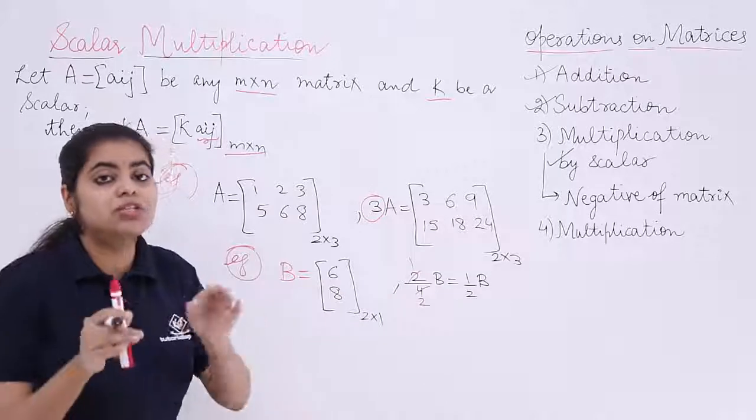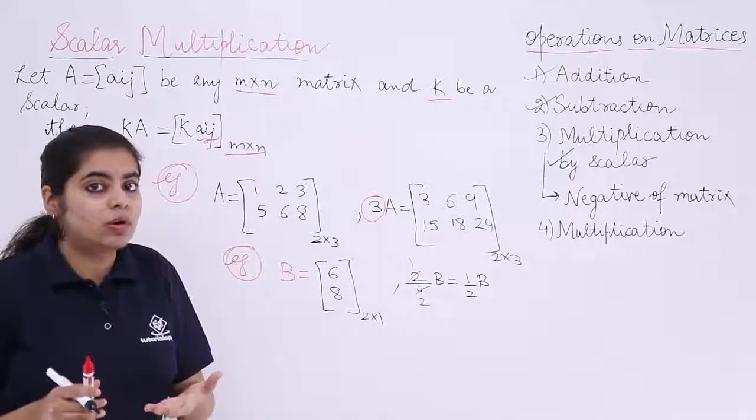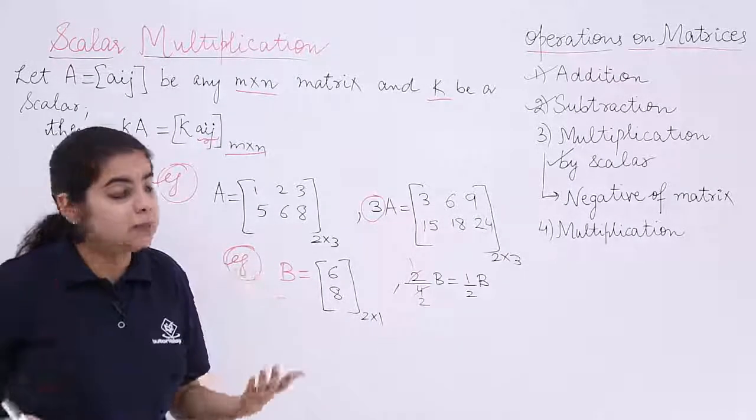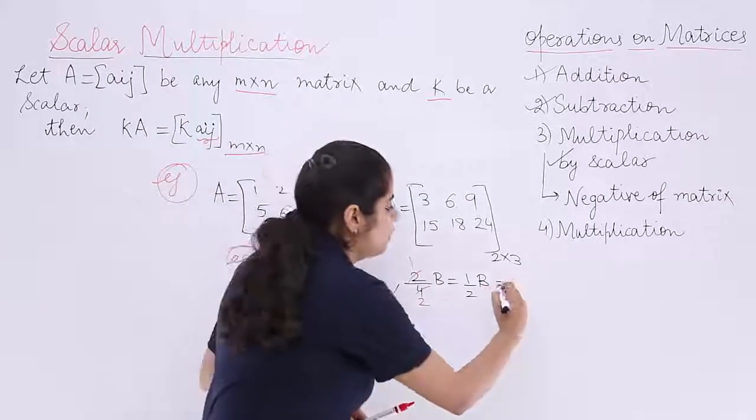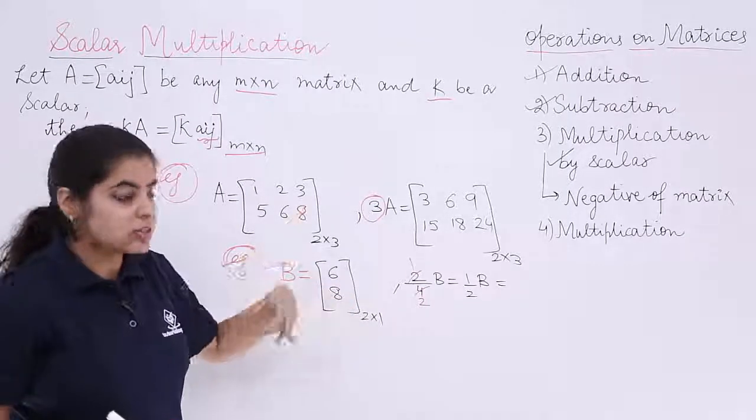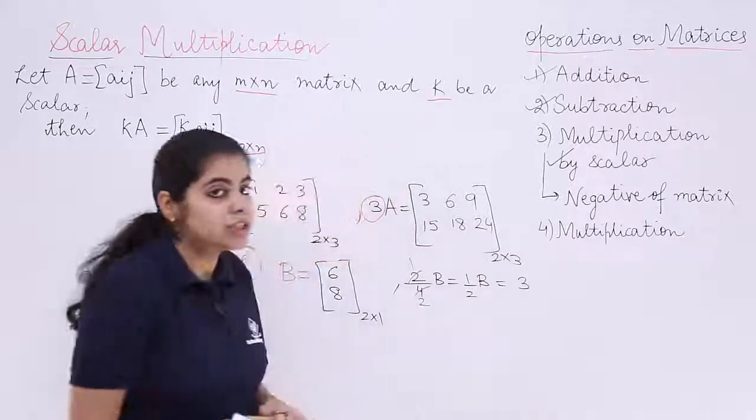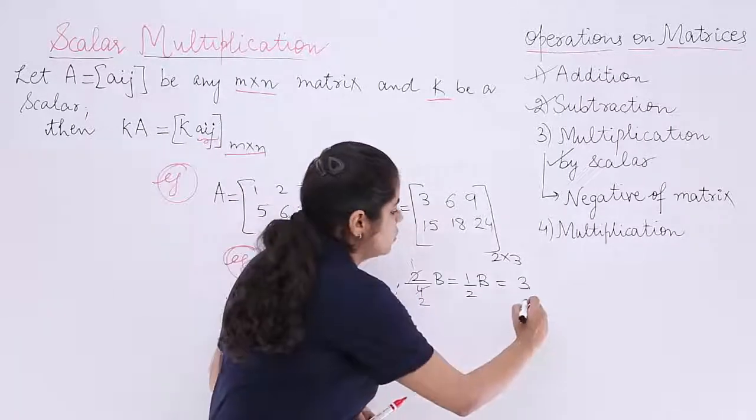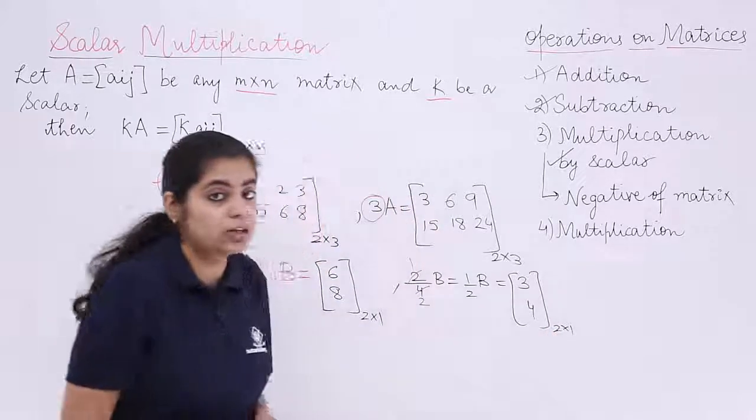Why I have taken this example? To say that the scalar quantity can be a fractional quantity with numerator and denominator both. You don't need to worry. Half of B means wherever the elements are there - this is six, so six multiplied by the scalar. Half into six is three. The next thing is eight. Half into eight is four.